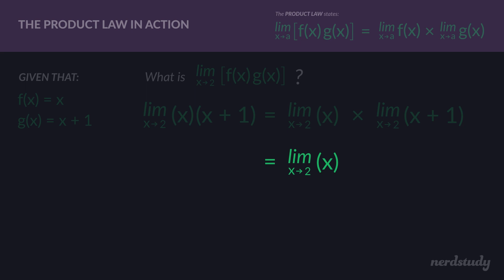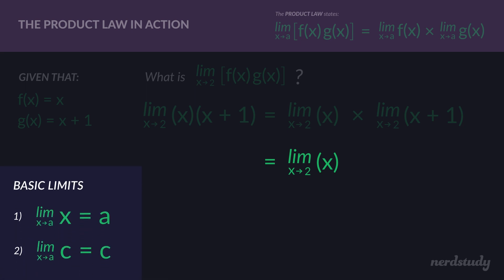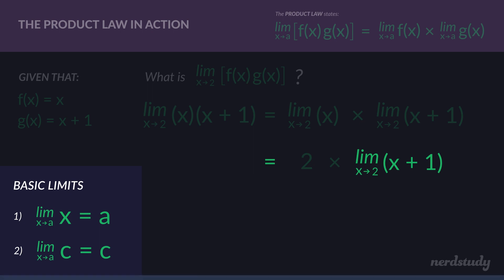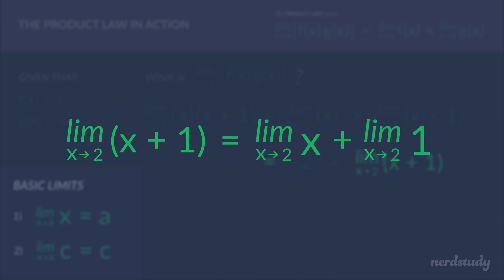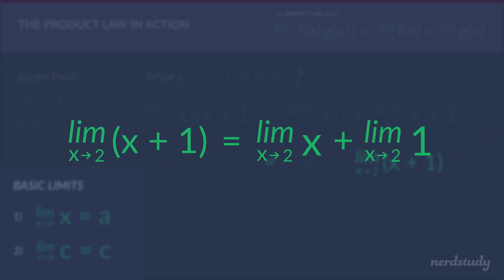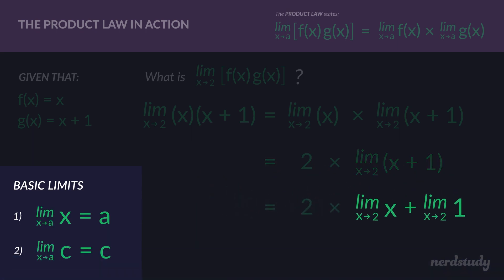On the left, the limit of x as x approaches 2 is going to be 2. For the right side, you might remember from the sum law that you can separate this to the limit of x plus the limit of 1. The limit of x as x approaches 2 is 2, and the limit of a constant is just the constant itself, so that's 1. So 2 plus 1 equals 3, and you get 2 times 3 equals 6.